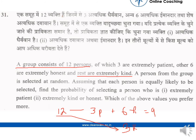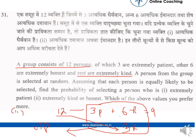A person from the group is selected at random — 1 person is being selected, and assuming that each person is equally likely to be selected, any person can be selected. We need to find the probability of selecting a person who is extremely patient (Case 1), and for Case 2, who is extremely honest or kind.